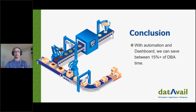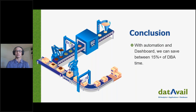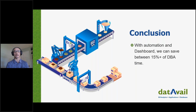To recap, we discussed automation ideas that can improve quality of service, avoid human errors, efficiently manage the system's day-to-day operations, catch potential problems ahead of time, and provide better customer support. To summarize, you can reduce the total DBA time spent supporting the system by 15% or more.